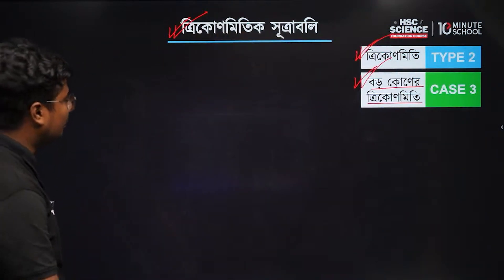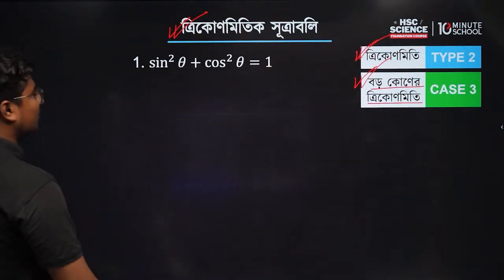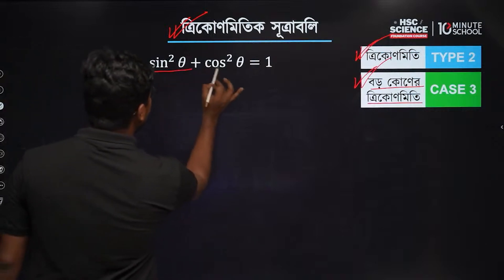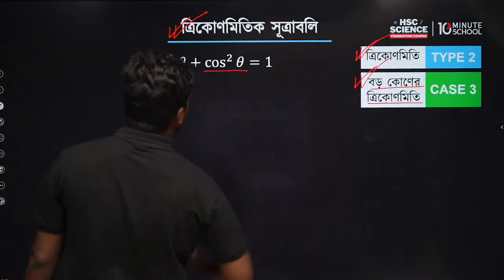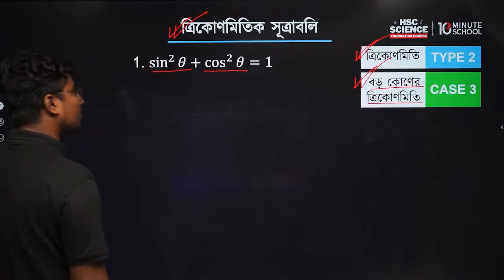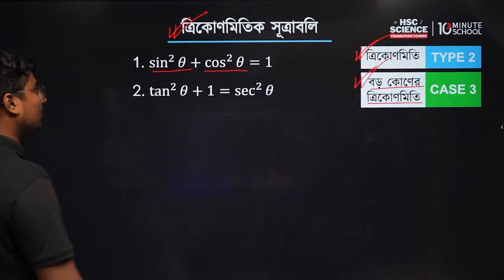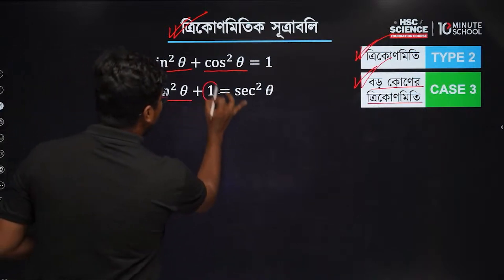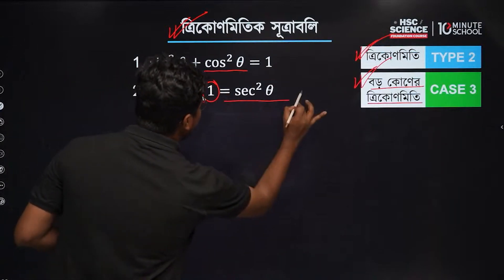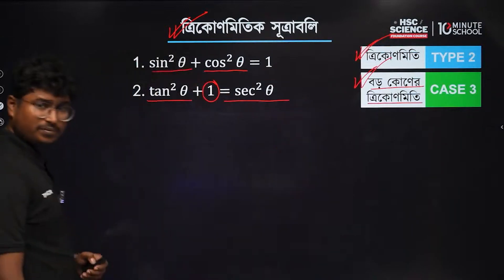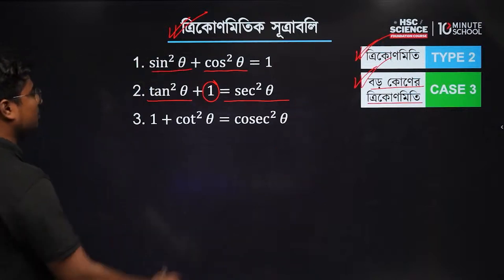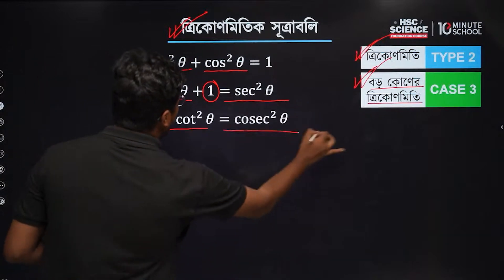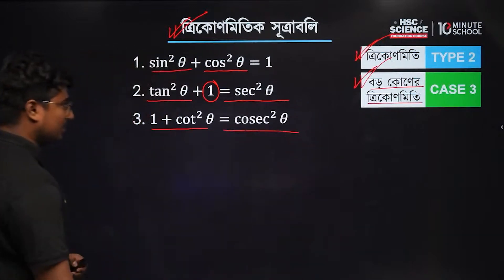You can see this function: 10 square theta plus 1 is equal to c square theta. And then look at this function: 1 plus c square theta is equal to c square theta.